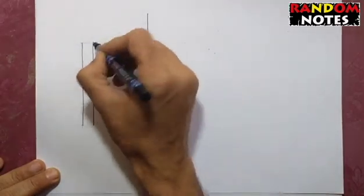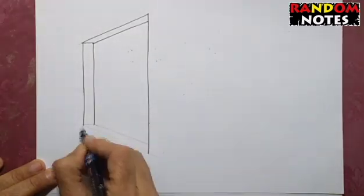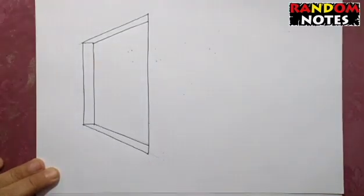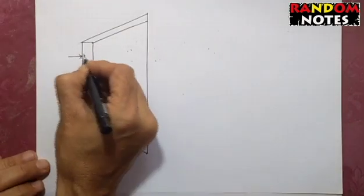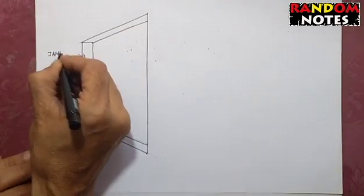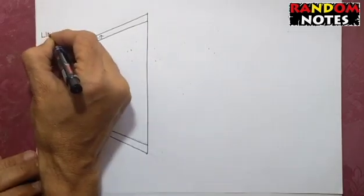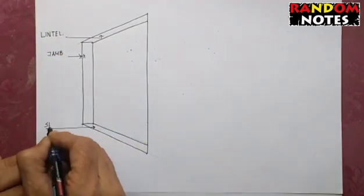Things which are getting cut by the section plane and how they are depicted in the drawing. A window opening has a few parts: you have the two vertical surfaces which are termed as the jamb, this is the soffit or the bottom part of the lintel, and this is the top part of the sill.